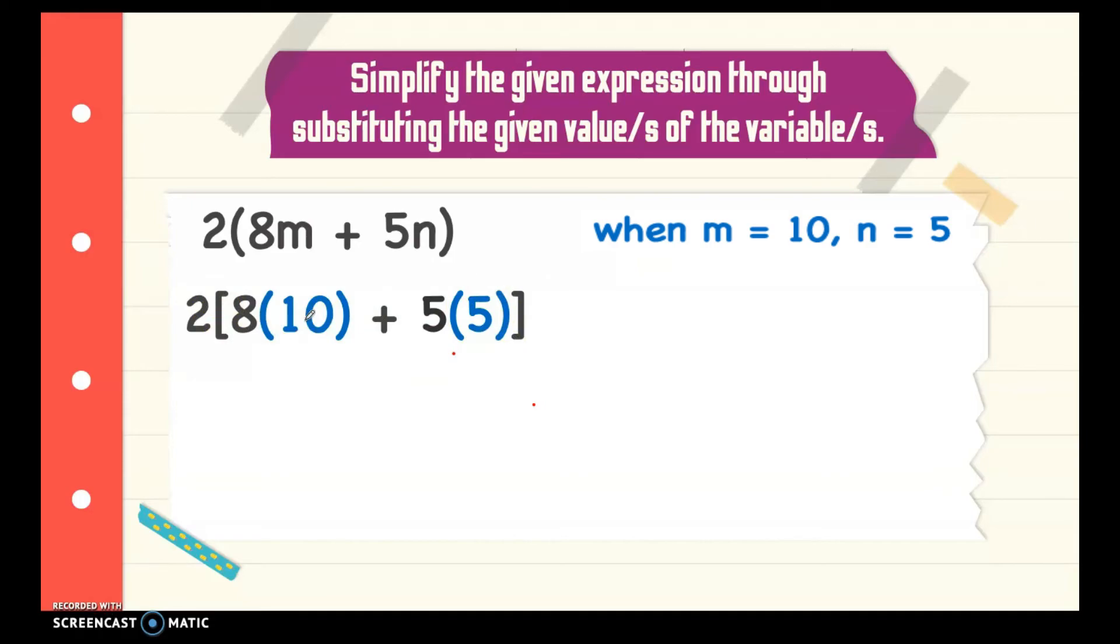Let's perform 10 times 8 is 80 and then 5 times 5 is 25. You perform first inside the group which is 80 plus 25 that is 105. As you can see there is no operation between the parenthesis and these two. That means it's a default operation which is multiplication. So, 105 times 2 that is 210.